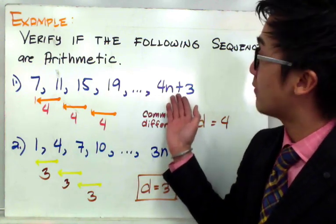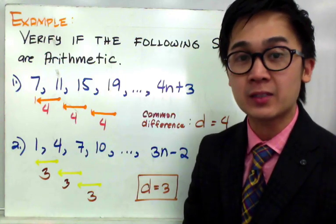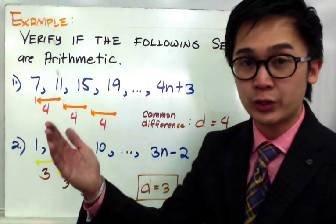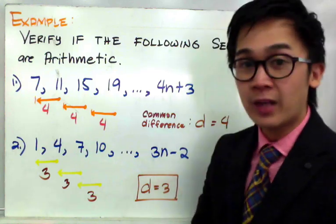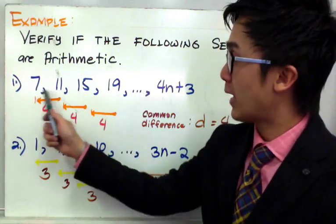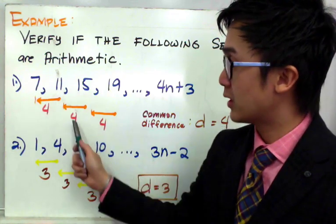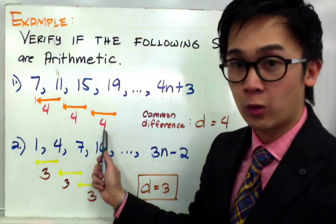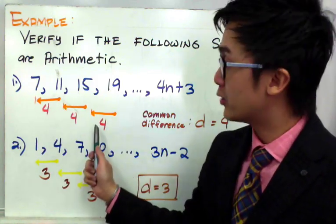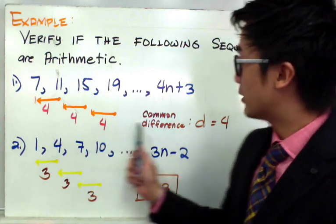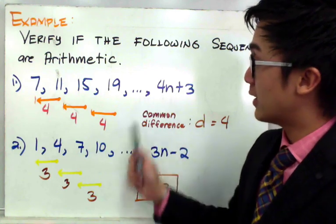To verify if this is an arithmetic sequence, all you need to do is find the common difference — that is, the difference between consecutive terms. So we have: 11 minus 7 gives us 4, 15 minus 11 is 4, and 19 minus 15 gives us 4. Since all differences are the same, we have a common difference, which means this is an arithmetic sequence.